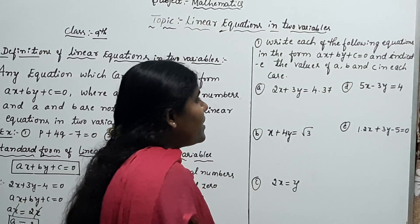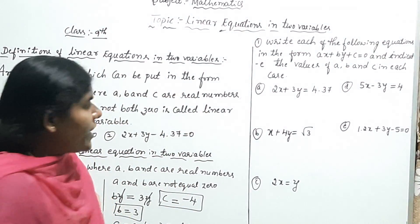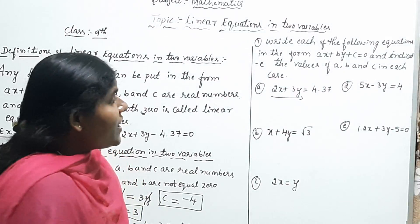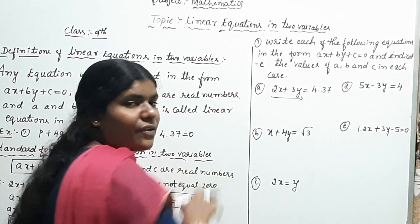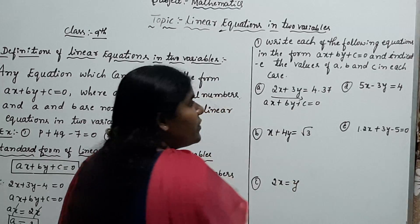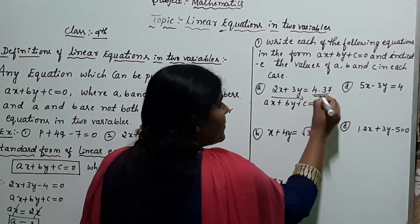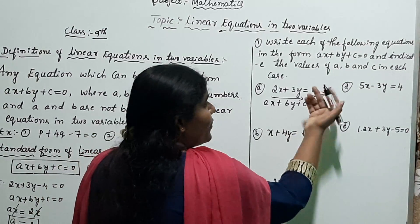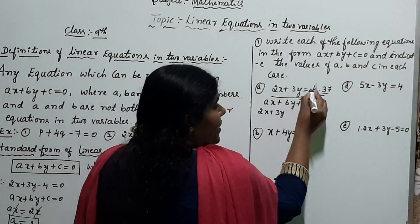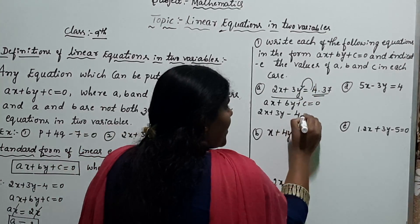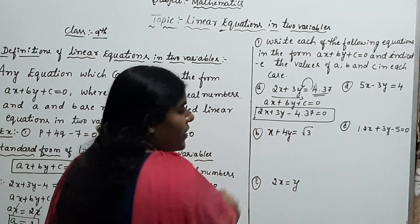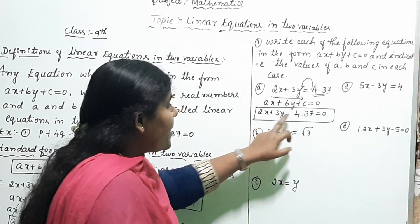Example one: 2X plus 3Y equals 4.37. Observe carefully — on the left side there are two terms, but the standard form has three terms. To express in standard form: write AX plus BY plus C equals zero. The term 4.37 is on the right-hand side, so transfer it to the left-hand side: 2X plus 3Y minus 4.37 equals zero. This is the standard form — the given expression is a linear equation in two variables.